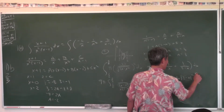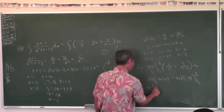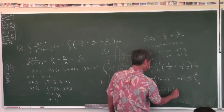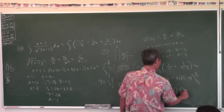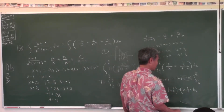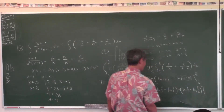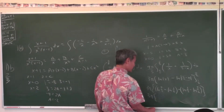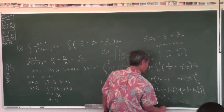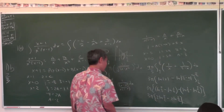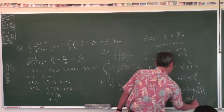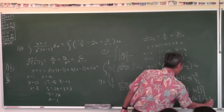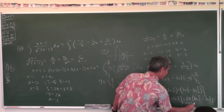Evaluated from 1/2 to 5/2. Plugging in the top: natural log(5/2) minus natural log(1/2). Plugging in the bottom: natural log(1/2) minus natural log(5/2). So you get 3π times 2·ln(5/2) minus 2·ln(1/2). Factor out the 2: 6π times [ln(5/2) minus ln(1/2)].